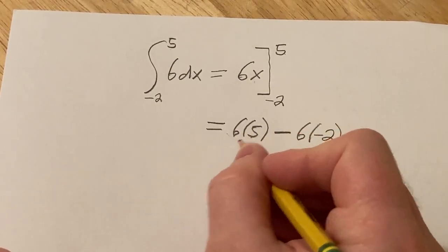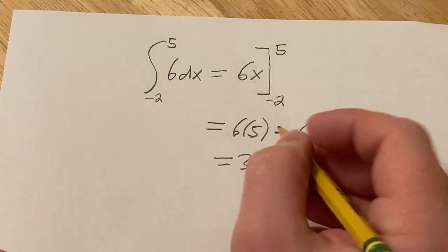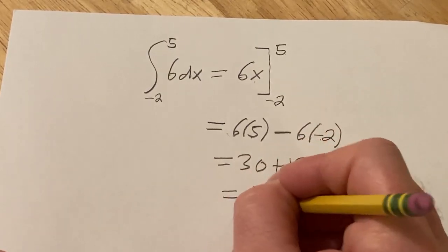So this is 6 times 5 which is equal to 30. And then 6 times negative 2. Well that's going to be 12. So this is plus 12. And so that's equal to 42.